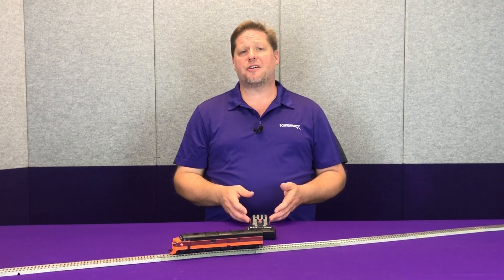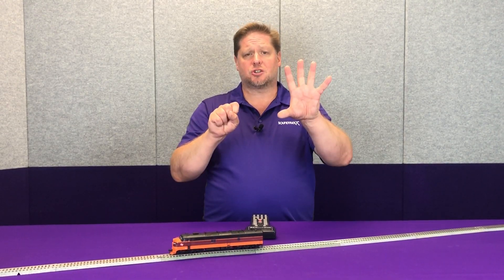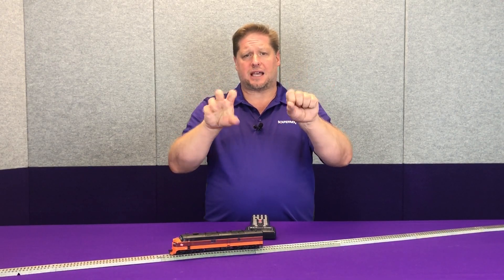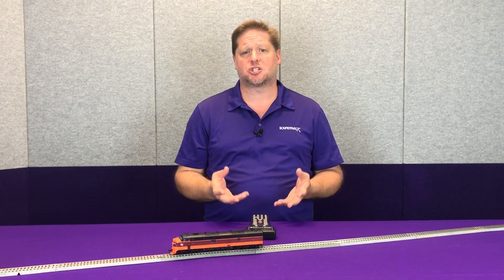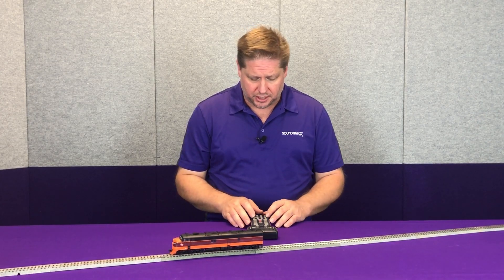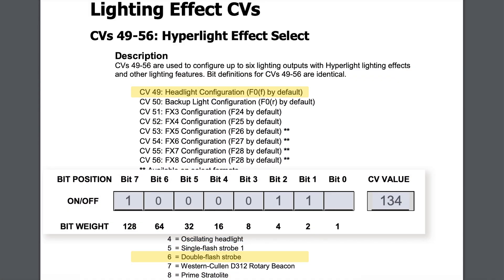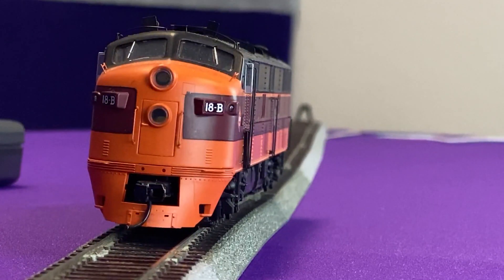Both strobes have phase A and phase B — on or off — so they can be exactly opposite, which is most commonly used with ditch lights. Now we're going to show the double pulse strobe, which is lighting effect number 6. With an LED we set CV 49 to a value of 134, and now you can see that double pulse strobe light effect.